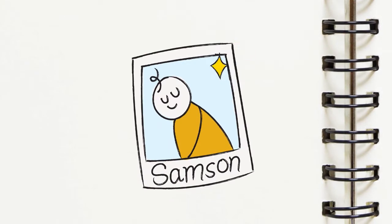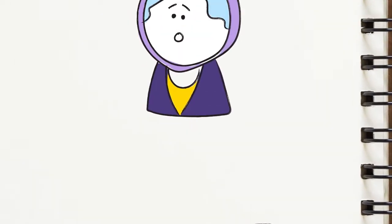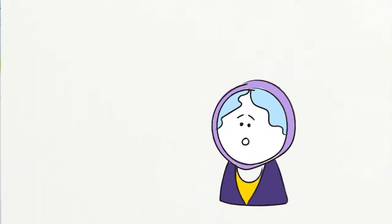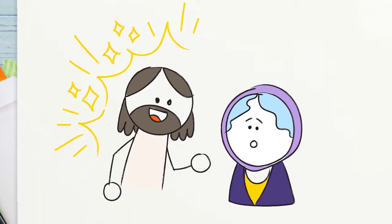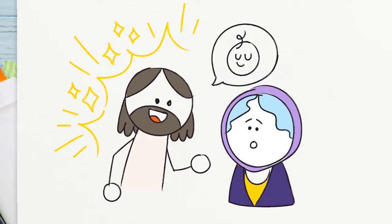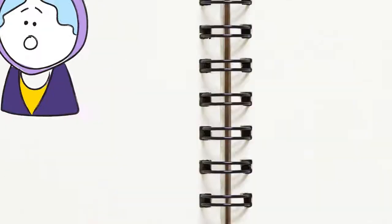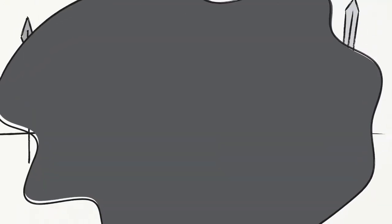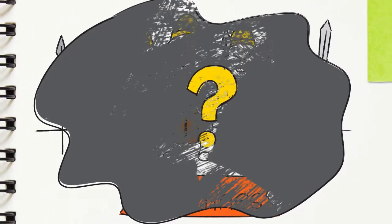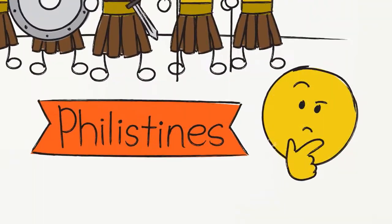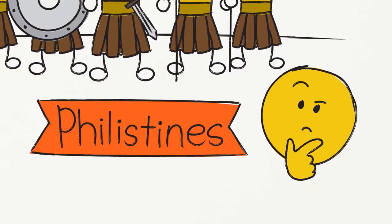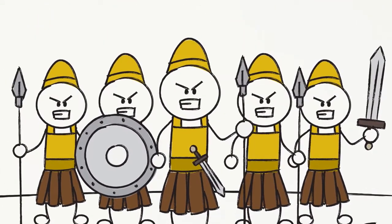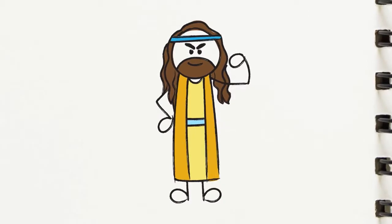But to really understand why God gave Samson his special strength, let's go back to when he was a baby. Wait, he had supernatural baby strength? Awesome! Even as a tiny baby, Samson was set apart for a special plan God had for him. Before Samson was even born, God sent an angel to his mom to tell her that she would have a son who would bring God's people victory over their enemies.